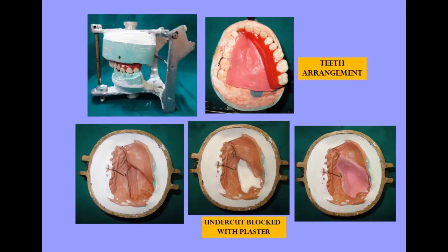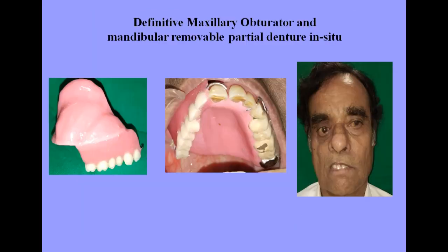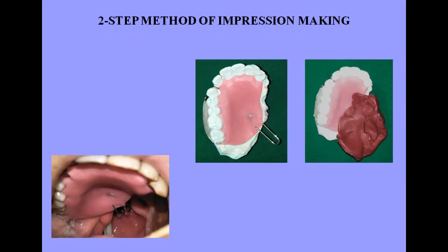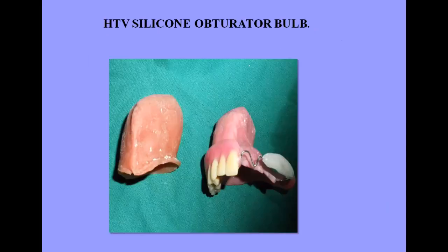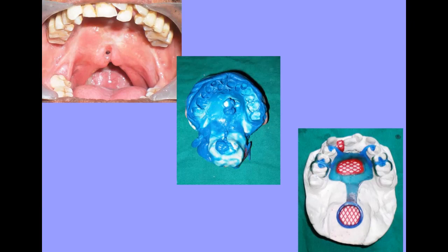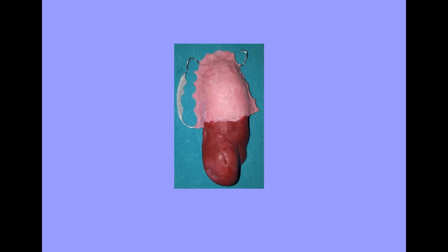Again, another case where a hollow bulb obturator was fabricated, and you can see the difference after prosthetic rehabilitation. When the defect is extending into the soft palate, you need to go for a two-stage impression technique. For larger defects, you can use a palatal strut technique, or magnets can be incorporated, or HTV silicone can be used. This is another case where a cast partial obturator was fabricated for a soft palate defect as well — you can go for cast partial frameworks. Another case where a two-stage impression technique was used to restore the soft palate defect.